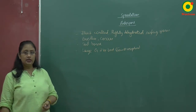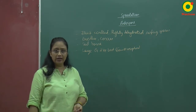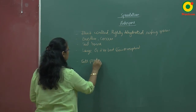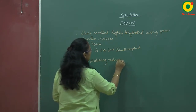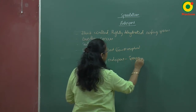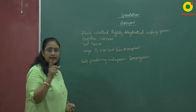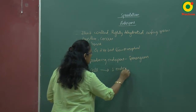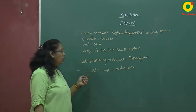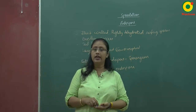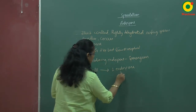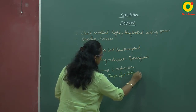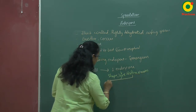The bacterial cell that produces an endospore is known as a sporangium. One cell will produce only one endospore. The shape, size, and position of the endospore varies within the cell.